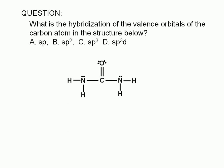What is the hybridization of the valence orbitals of the carbon atom in the structure shown here? A, sp; B, sp2; C, sp3; or D, sp3d.